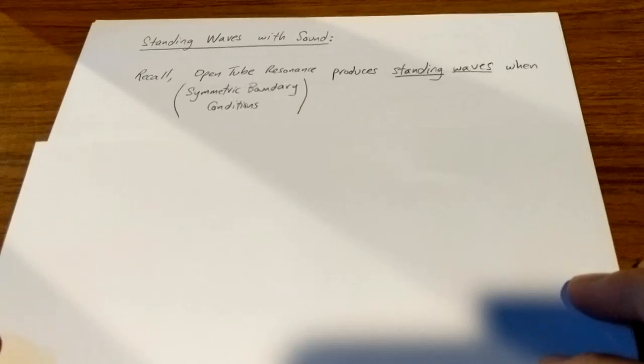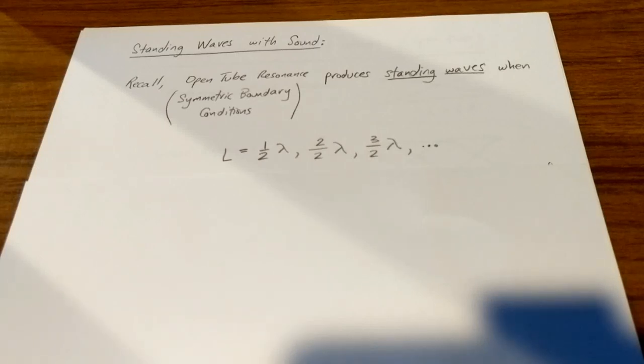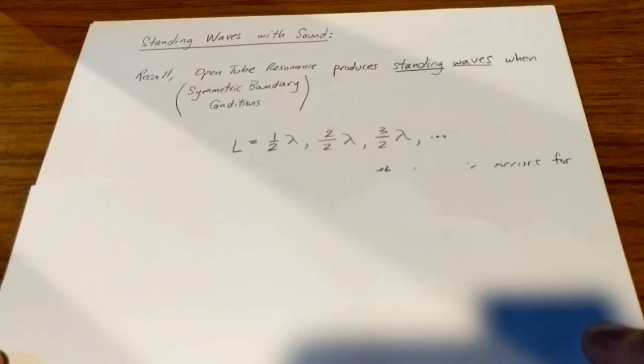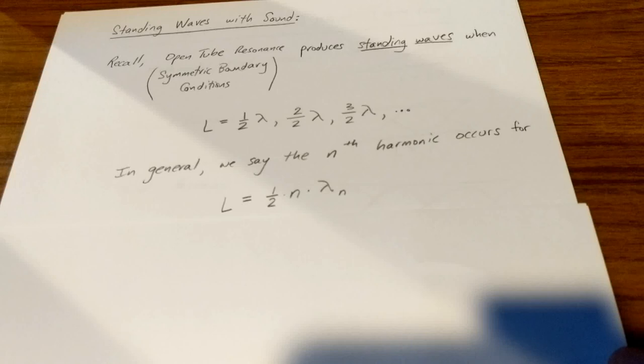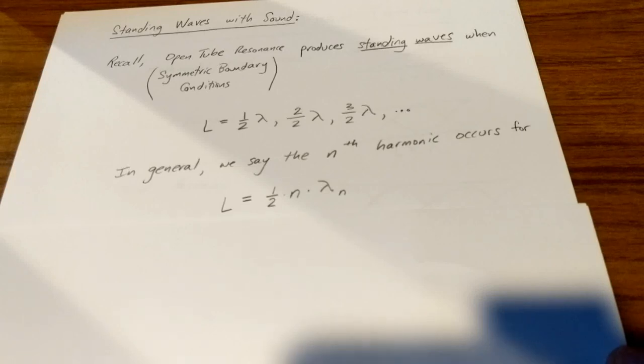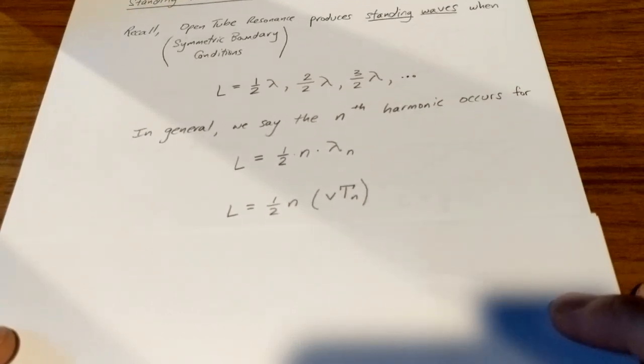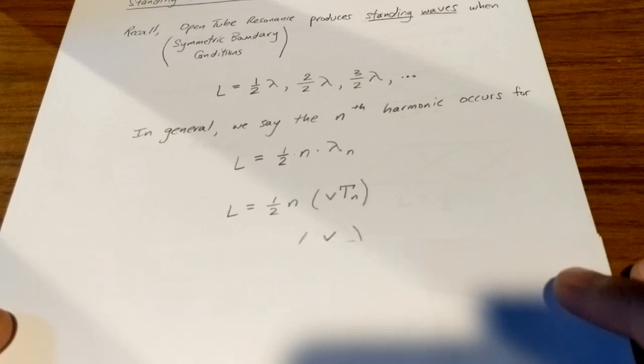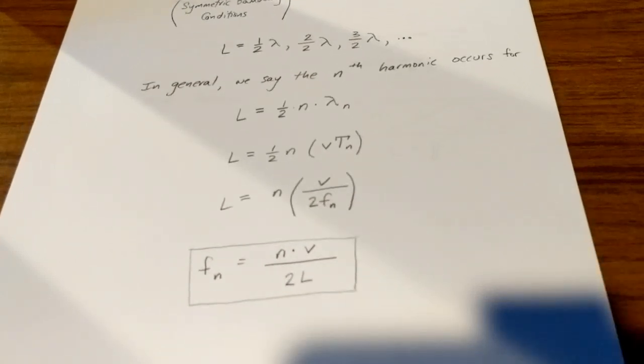These sorts of standing waves are formed when the length of the slinky or, in the case of sound, the tube is half or two halves or three halves or any multiple of a half wavelength. In general, we say the nth harmonic frequency occurs when the length is a multiple of half of the wavelength, but if we work with what we know about waves here, we can derive a different expression for the nth harmonic frequency. We've just replaced lambda with v times t and now we've replaced t with one over frequency. And if we solve for frequency, we get that the nth harmonic frequency for open tube resonance or for standing waves with symmetric boundary conditions is given by n times v over 2l.